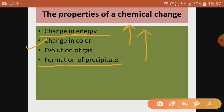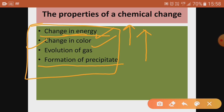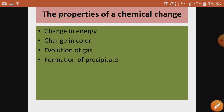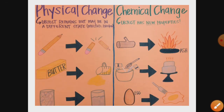We know that chemical changes are irreversible and new substances are formed, but we should also look for these indications: change in energy, change in color, evolution of gas, or formation of a precipitate. This slide gives a clear pictorial difference between physical change and chemical change.